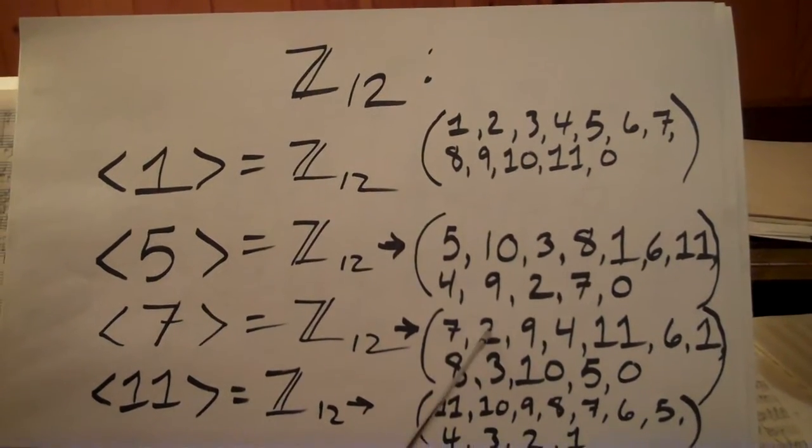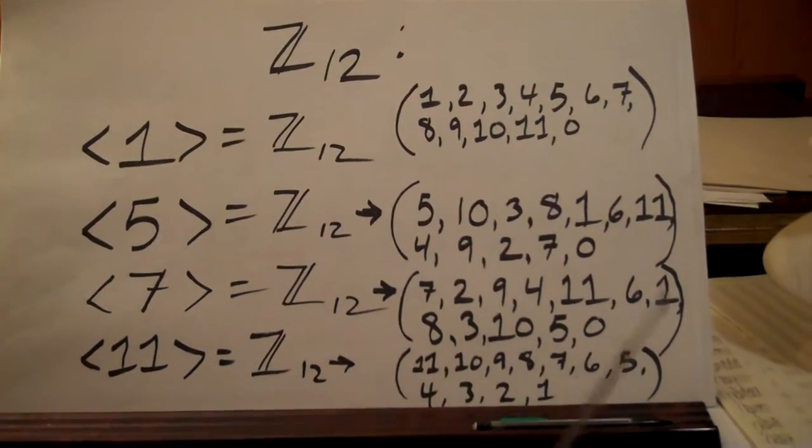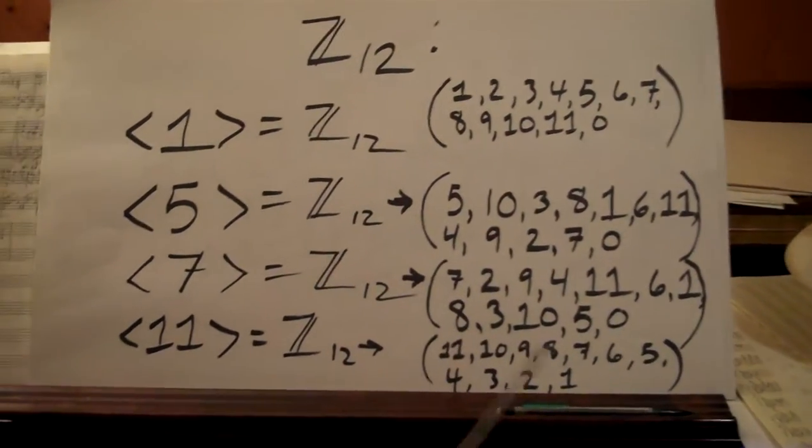7 similarly, mod 12, 7 plus 7 is 2, plus 7 is 9, and so on. And then 11, we see the following sequence.